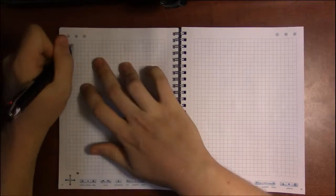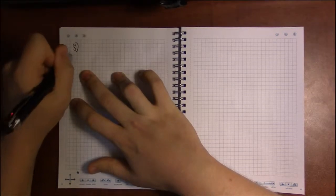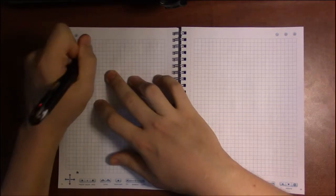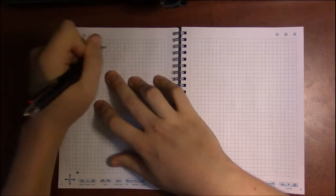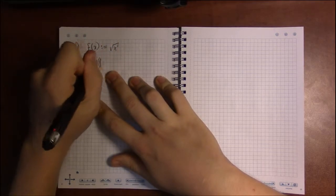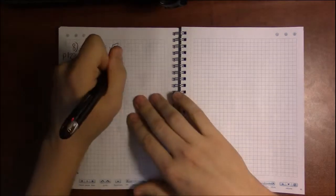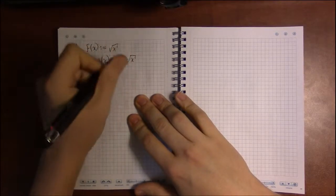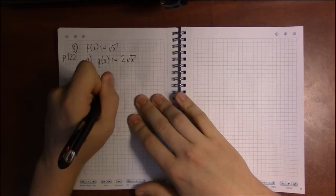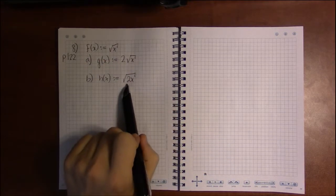So I'm looking at problem 8 in section 1.5 on page 122. And I see that we're defining f to be the square root function, just square root of x. Now g of x is defined to be the square root function, but with an extra 2 on the outside, 2 times square root of x. And h of x is defined so that the 2 is on the inside of the square root, square root of 2x.